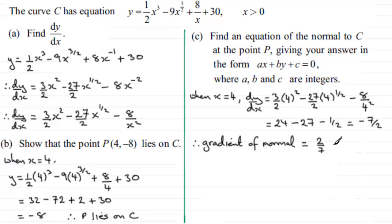The equation of the normal at P uses y - y₁ = m(x - x₁). We have point P at (4, -8), so the equation is: y - (-8) = (2/7)(x - 4), or y + 8 = (2/7)(x - 4).